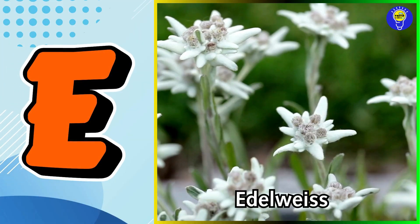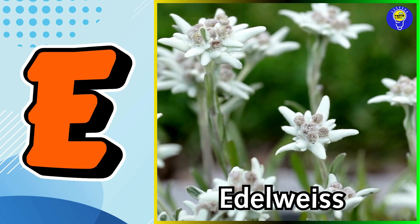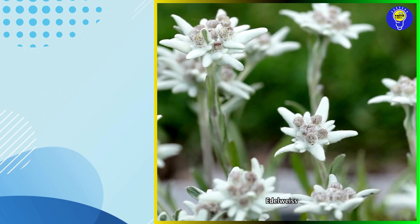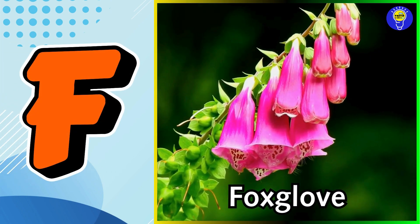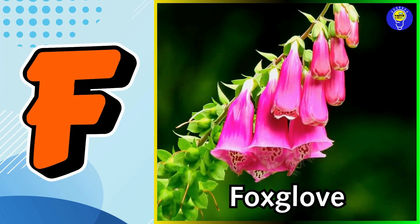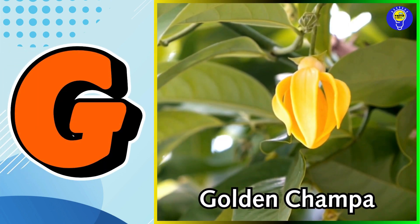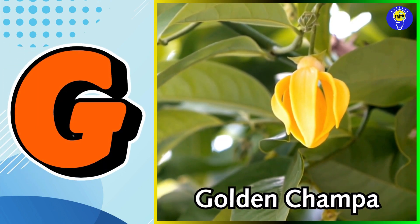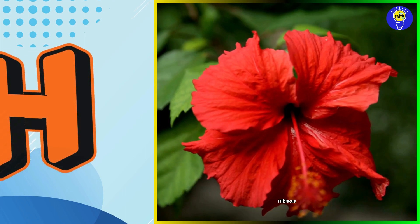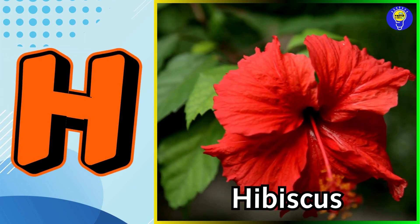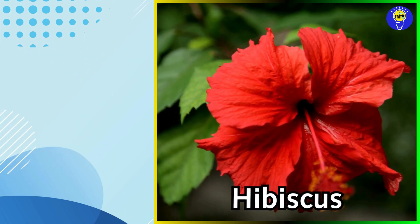E is for edelweiss flower. F is for foxglove flower. G is for golden compa flower. H is for hibiscus flower.